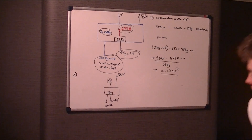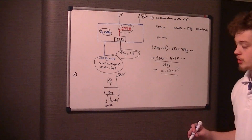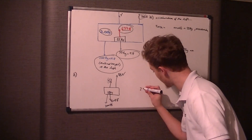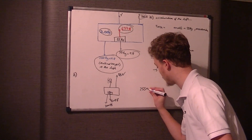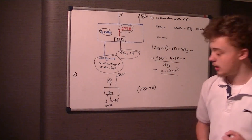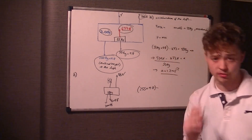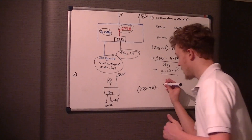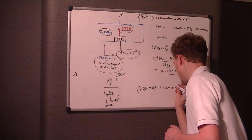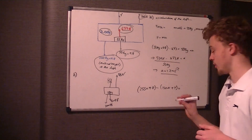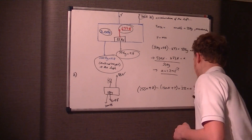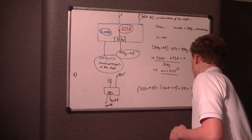F equals ma — F is obviously the resultant force and it's being pulled down. So it's 255 times 9.8, take away 150 newtons, plus T, and that equals 255 kilograms times acceleration, which we know from the previous part is 1.2.